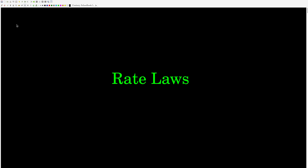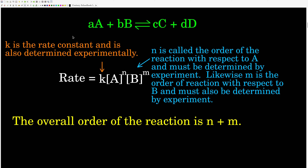This video is about rate laws. For our generic chemical equation, aA plus bB goes to cC plus dD, the lowercase letters stand for the coefficients in the balanced equation, and the capital letters stand for the formulas of the species — the reactants and the products.